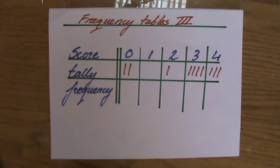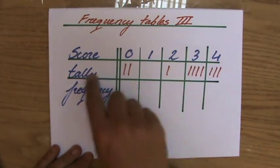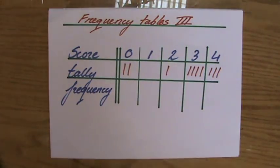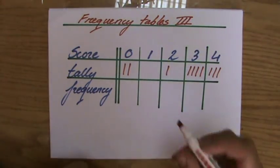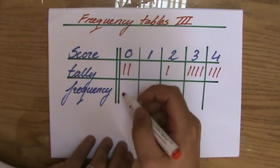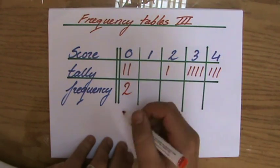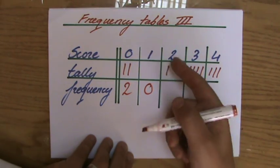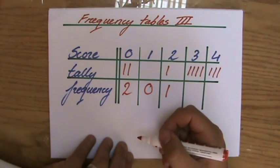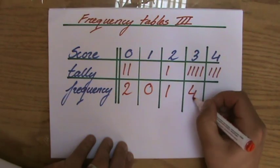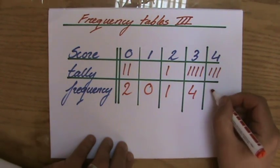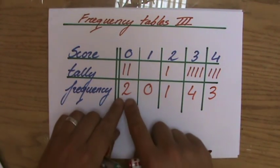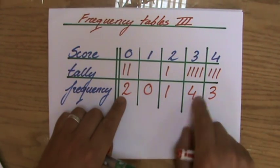I used the tally diagram to record a tally every time somebody had a score of zero, two, three, or four. At the end I can complete my frequency table: a frequency of two got zero, nobody got a one, one person had a two, four people had a three, and three people had a four. So how many people did I ask in total? Ten people.